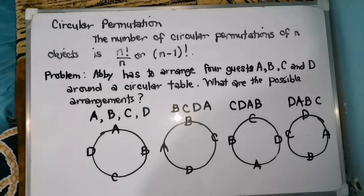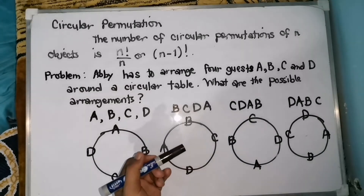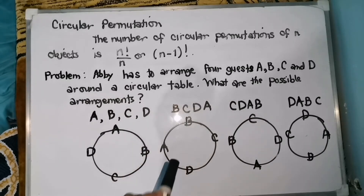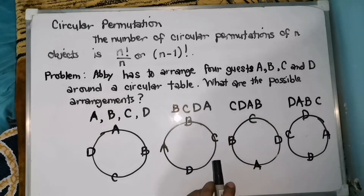So, those are the possible arrangements. But we cannot distinguish among these 4 arrangements unless one of the objects is fixed. Masyadong magulo yung ginawa nating arrangement kasi walang letters or walang guests na fixed dito sa ating ginawang example. So, gagawin natin ay magfix tayo ng isang guest at gagamitin natin yung guest A para ma-arrange naman natin yung tatlo pang guests para malaman natin yung exact na possible arrangements ng 4 guests in a circular table.